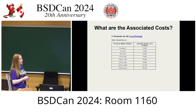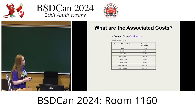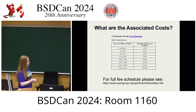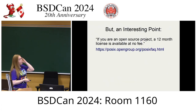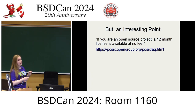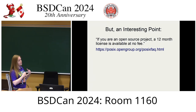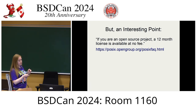What are the associated costs? POSIX has a reputation as an expensive certification, and even just looking at the core program costs confirms that. The full fee schedule is available publicly. However, there is an interesting point: if you're an open source project, you actually get a 12-month license period at no fee — you can become officially POSIX certified for 12 months for free. This is a way the Open Group encourages open source projects to become POSIX certified.